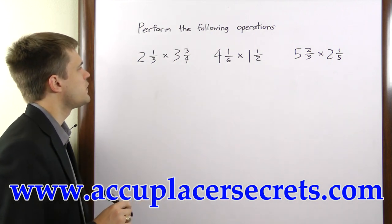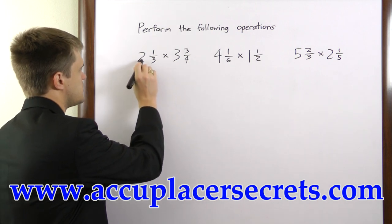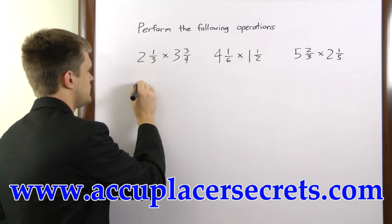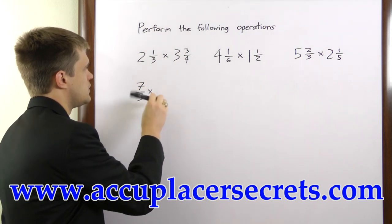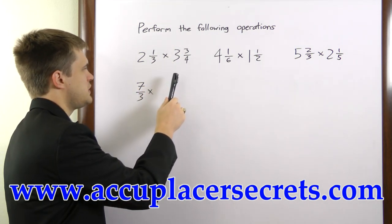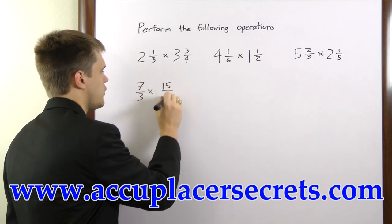First, we have 2 and 1/3 times 3 and 3/4. 3 times 2 is 6, plus 1 is 7, so we have 7/3 times 4 times 3 is 12, plus 3 is 15, 15/4.